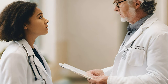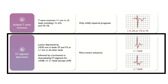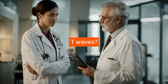ST segment depression is not only a qualitative sign but also a quantitative marker of risk. The number of leads showing ST depression and the magnitude of the depression are both indicative of the extent of ischemia and correlate with prognosis. Therefore, whenever ST depression is seen, measure the magnitude in millimeters and count the leads that show the depression.